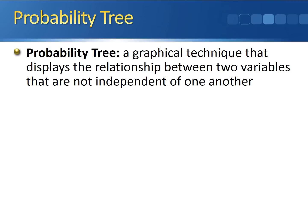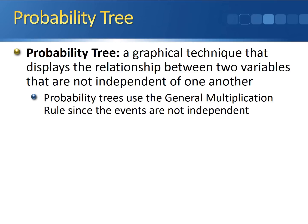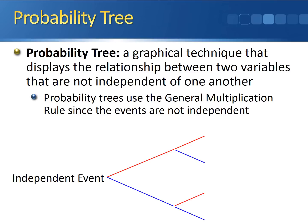Now that we've seen the general multiplication rule, we can define a probability tree. A probability tree is a graphical technique that displays the relationship between two variables where these two variables are not independent of one another. There is some relationship between them, meaning in order to understand the probability that the second event occurs, you have to know the probability that the first event occurred. Probability trees use the general multiplication rule because these events are not independent. The simplest type of probability tree has one set of branches at the beginning for your independent event, and a second set of branches for the dependent event — the event that relies on which outcome occurred for your first event.